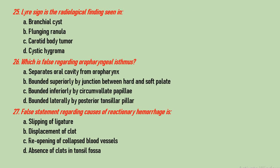Question number 25: Lyre's sign is a radiological finding seen in branchial cyst, plunging ranula, carotid body tumour, or cystic hygroma? Lyre's sign is a radiological finding seen in carotid body tumour, signifying splaying of the internal and external carotid arteries. Question number 26: which is false regarding the oropharyngeal isthmus? It separates the oral cavity from the oropharynx — correct. Bounded superiorly by the junction between hard and soft palate — correct. Bounded inferiorly by circumvallate papillae — correct. Bounded laterally by the posterior tonsillar pillar — wrong. It is actually bounded laterally by the anterior tonsillar pillar. So the false statement is D.